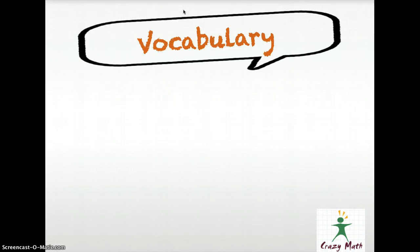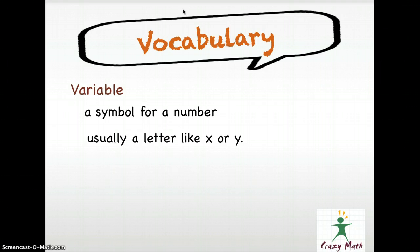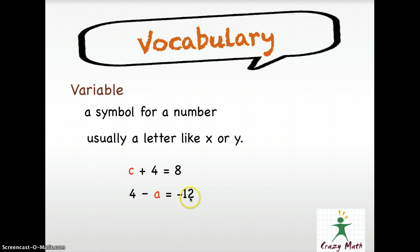First, we need to study some new words. Our first vocabulary is variable. A variable is a symbol for a number, usually a letter like X or Y, but you can use any letter in the alphabet. For example, C plus 4 equals 8 — C is your variable. 4 minus a equals negative 12 — a is the variable. 5t: whenever you don't see an operator in between a number and your variable, this is a multiplication operation, so 5 times t equals 45 — t is the variable.